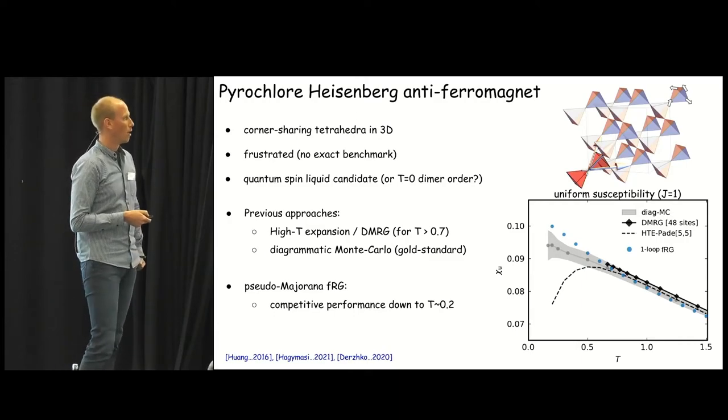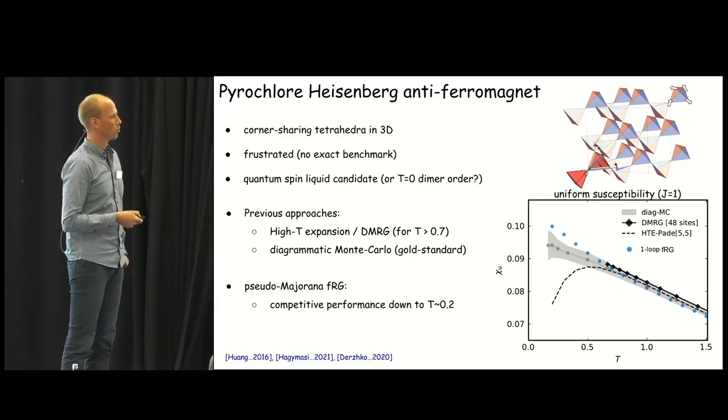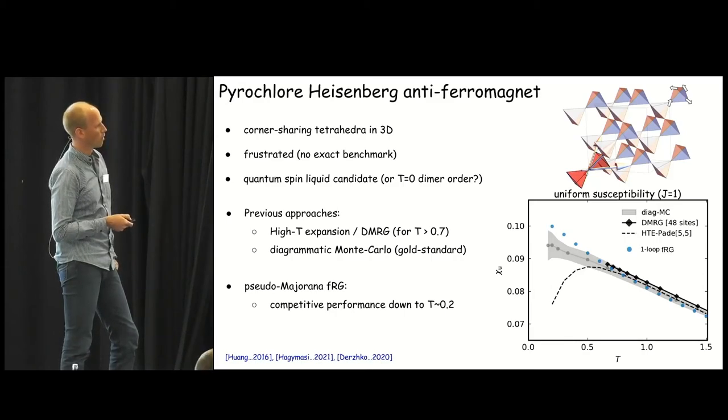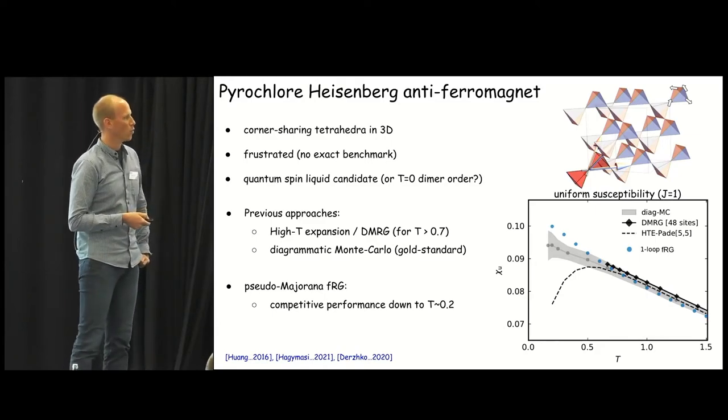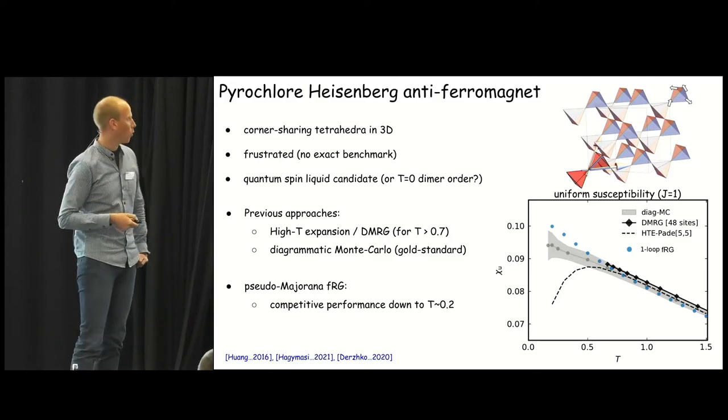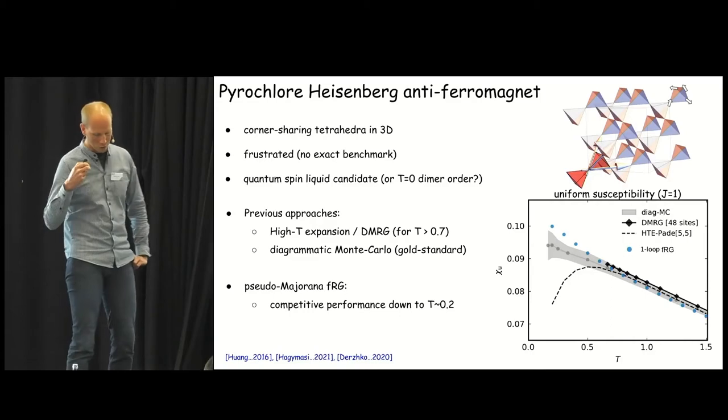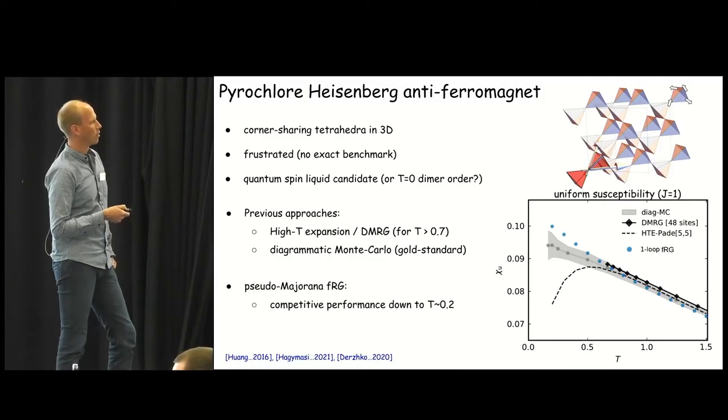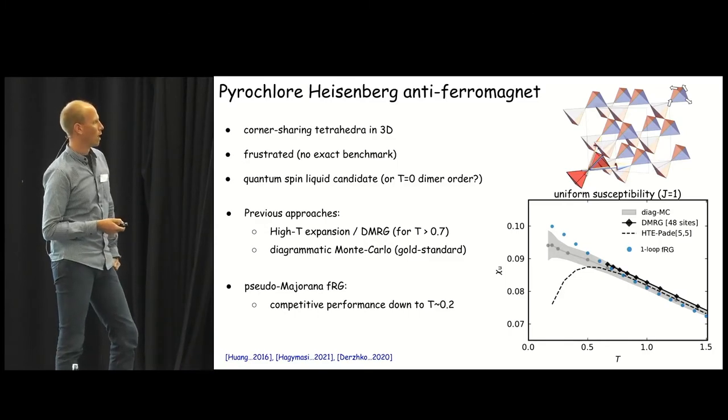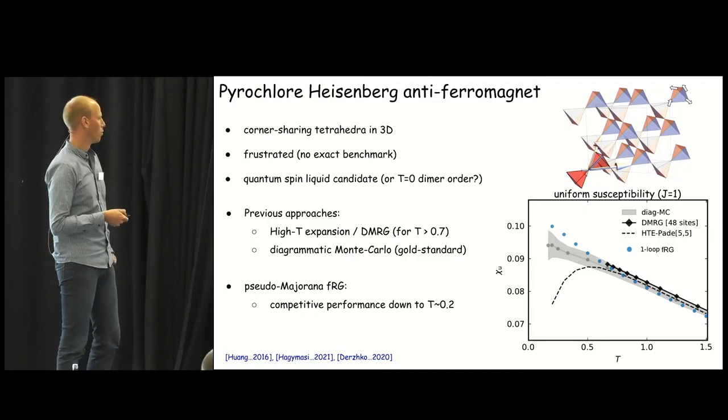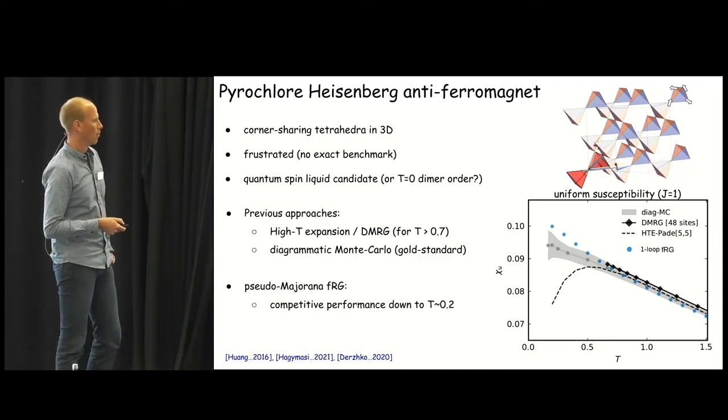Here are our results for the pyrochlor lattice. Now, I plot the uniform susceptibility that would be something that you measure in experiment over temperature. And I compare the one-loop FRG results against established methods. One is the high temperature series expansion that breaks down around 0.7, even though we already take the Padé approximant here. You can do DMRG on a cluster of 48 sites. And here the authors say, oh, this is again only down to 0.7. I think the gold standard method for this type of system is the diagrammatic Monte Carlo, which is perturbation theory, but not resummed up to some very high order. And this is this grayish region. And we find that our results compete very well with this diagrammatic Monte Carlo results. As a bottom line here, I think we can say that the pseudo-Majorana FRG is competitive in performance down to about 0.2 J in temperature for that lattice.